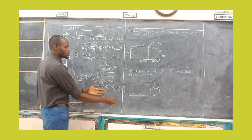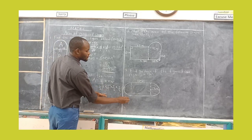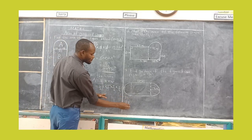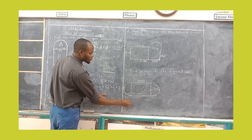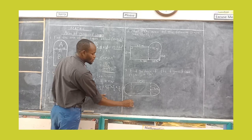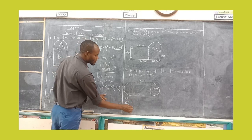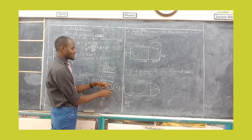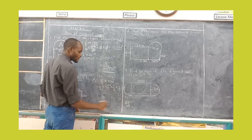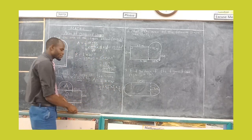You can also use 3.5, which is 35 over 10. If you cancel by 5, you get 7 over 2. That is why we use 7 over 2 as our radius. In most cases, if you find the diameter is not divisible by 2, you just leave it as a fraction.